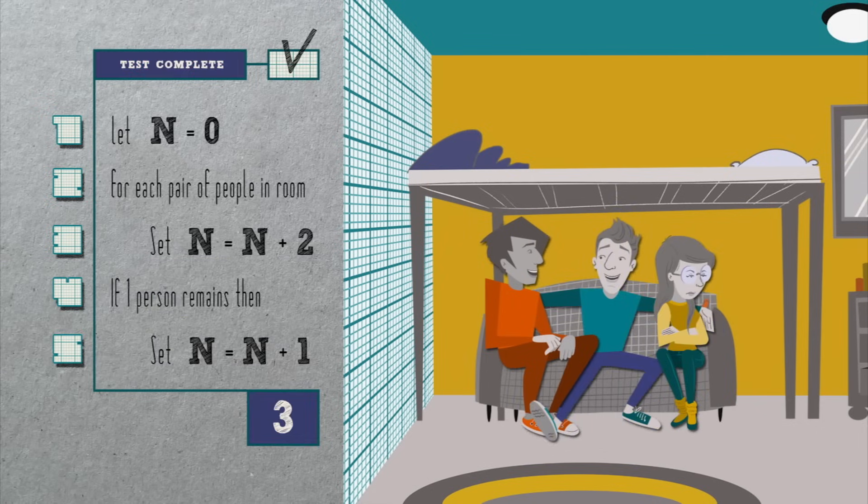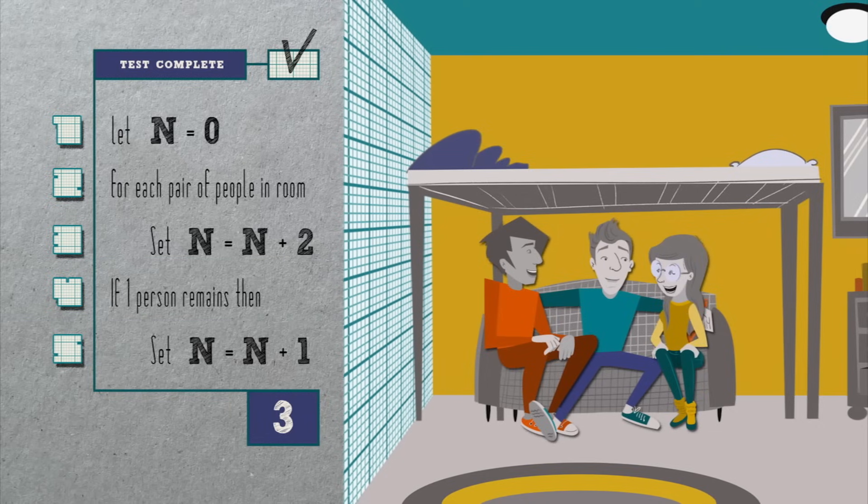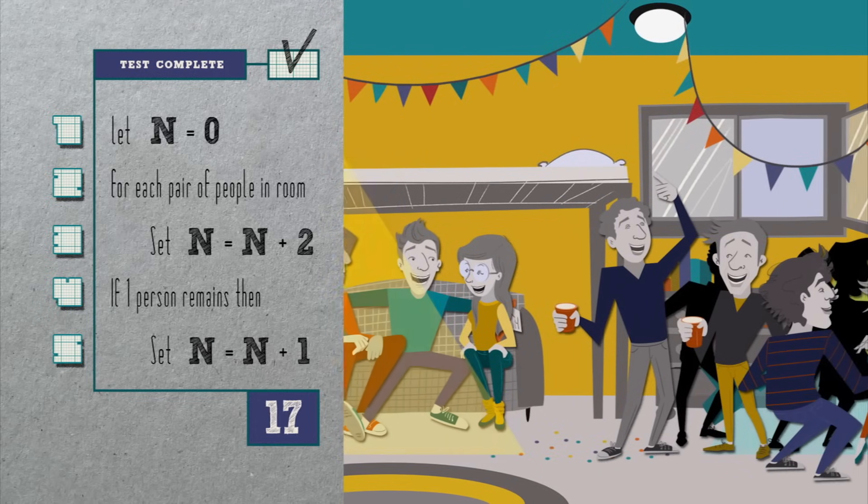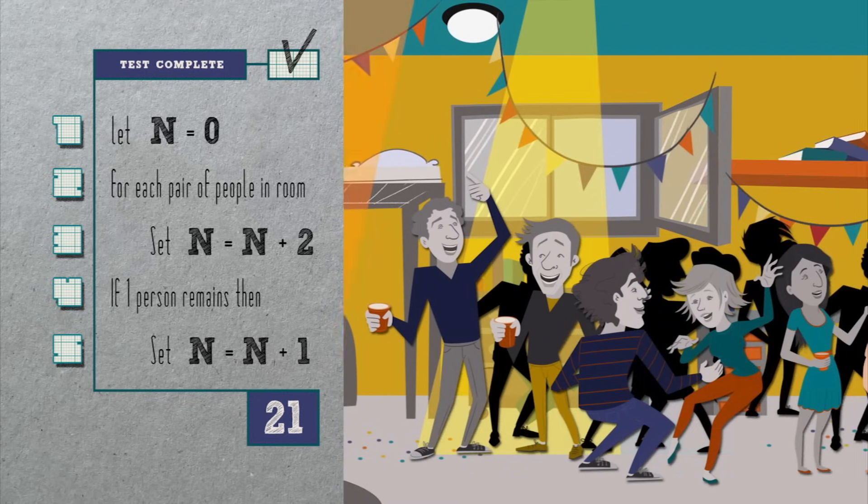To solve this particular problem, we've introduced in line four a condition, otherwise known as a branch, that only executes if there's one person we could not pair with another. And so now, whether there's one or three or any odd number of people in the room, this algorithm will now count them.